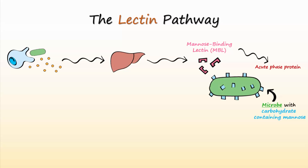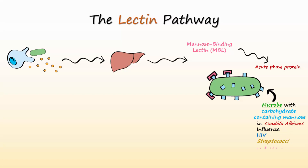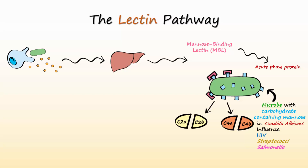MBL is released into the blood and recognizes and binds to carbohydrates like mannose, found on the surface of bacteria as part of the cell wall and on some viruses. For example, MBL has been shown to bind to Candida albicans, the fungus that causes yeast infections, as well as viruses like influenza and HIV, and bacteria like streptococci, which causes strep throat, and salmonella, which can be transmitted by eating raw eggs. After MBL binds to carbohydrates on the microbe, both C2 and C4 become activated. C2 is split into C2a and C2b, while C4 is split into C4a and C4b. C2a and C4b then come together to form an enzyme that cleaves C3 to activate it.